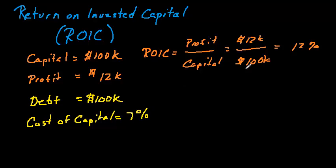We made twelve percent on our capital and had to pay seven percent for that capital, so our return is greater than our cost of capital. If you look at the value of the company: you started with a hundred thousand dollars, made twelve thousand dollars, and had to pay for the capital — but at the end of the year you had more than what you started with. That's when we say we're creating value for our investors, and that's good for the stock price.